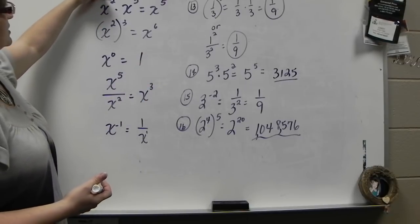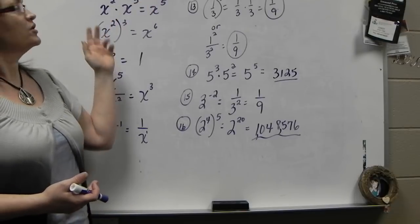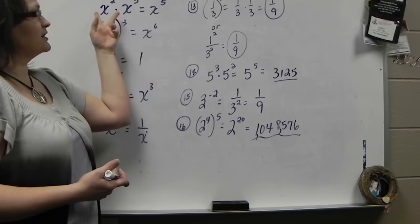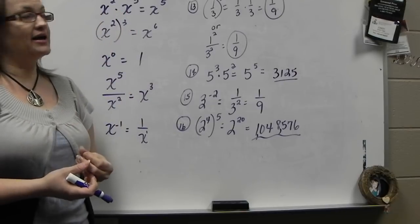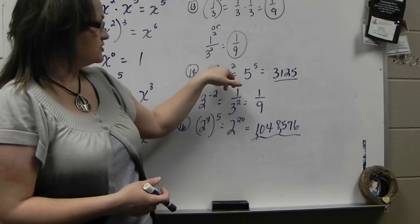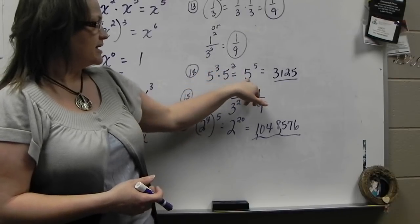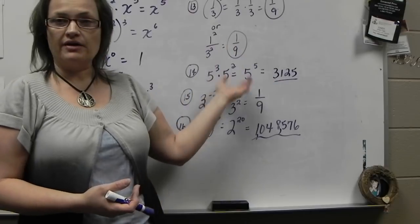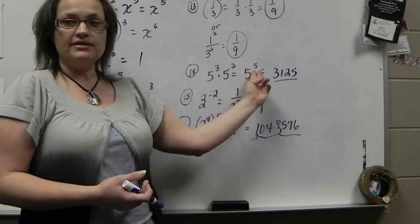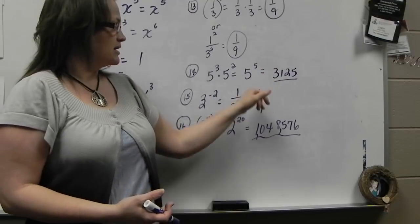If you have any base to a power times that same base to a power, you can bring the base over and add the exponents. When you multiply like bases, the exponents add. So that's what we do in number 14 on your study guide. 5 to the third times 5 to the second will be the same as 5 to the 3 plus 2, which is 5 to the fifth. Again, like bases with multiplication, add the exponents.